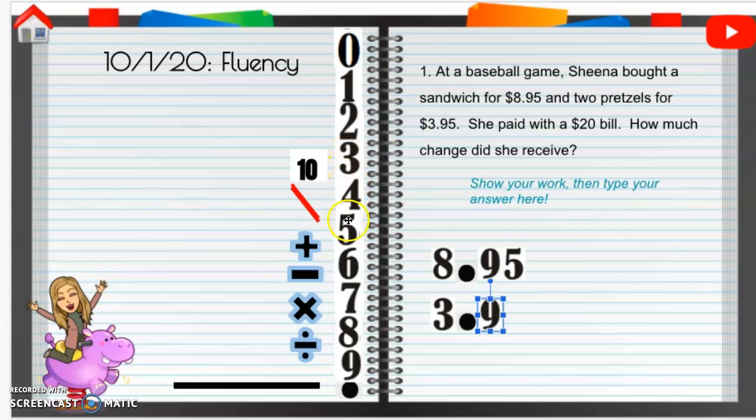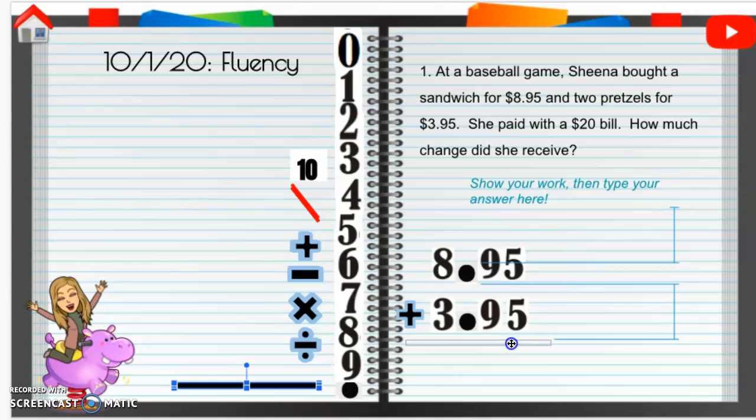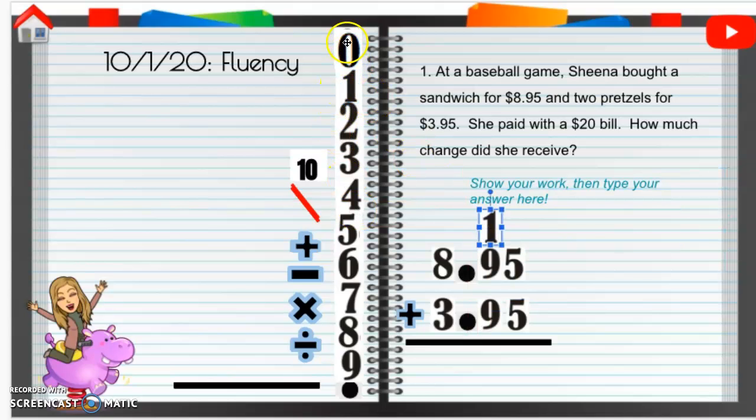So we need to figure out first how much she paid total for these two items, or these three items, but these two prices. And then she's paying with a $20 bill, so we're going to figure out her total first. So 5 plus 5 is going to be 10. So I'm going to put this one up here. Drop the 0. So carry that 1. 9 plus 9 is 18, plus 1 is 19. So that 1 and the 9. What am I doing with that decimal? Drop it down! Drop it low, low, low!